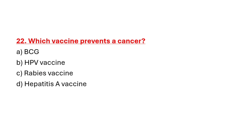Question 22: Which vaccine prevents cervical cancer? Option A: BCG. Option B: HPV vaccine. Option C: Rabies vaccine. Option D: Hepatitis A vaccine. Correct answer is Option B: Human papillomavirus vaccine.